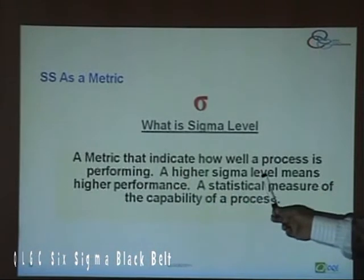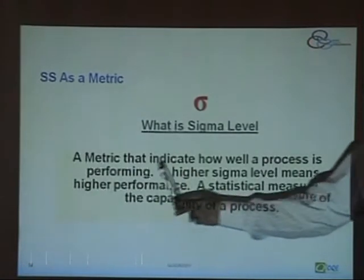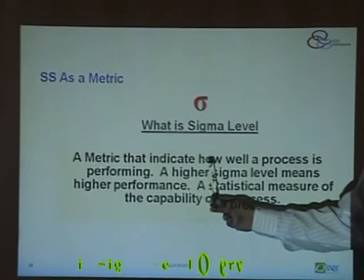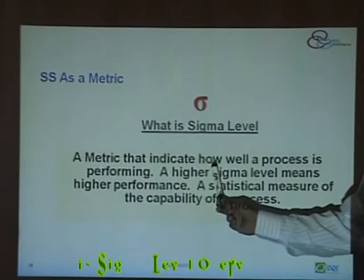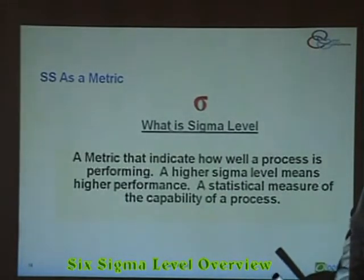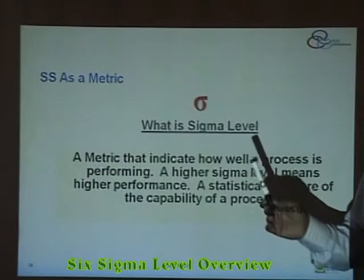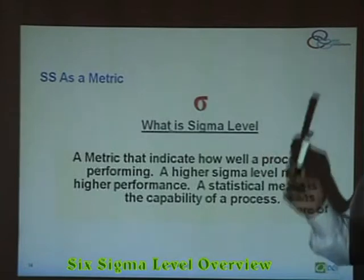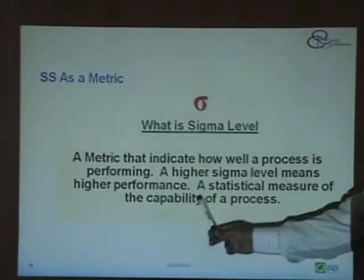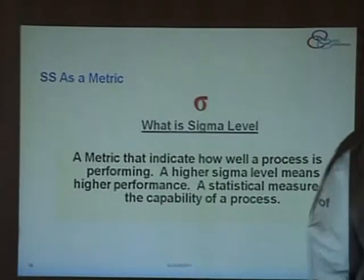A higher sigma level means higher performance. Note that I am using the word sigma level, not just sigma — there is a big difference. Sigma is dispersion away from your mean, whereas sigma level is something different. Sigma level is a statistical measure of the capability of the process.